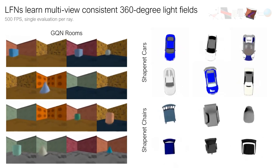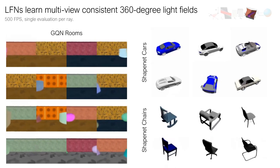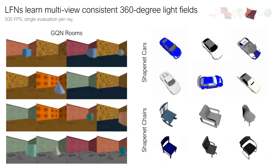On the right, we show uncurated samples of shape-net cars and chairs, reconstructed from 50 observations each. Reconstructions are almost perfectly multiview-consistent.